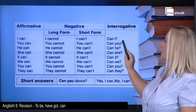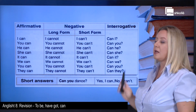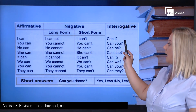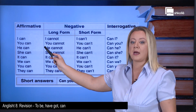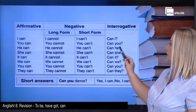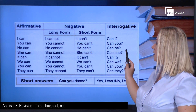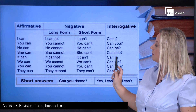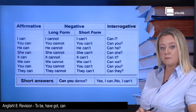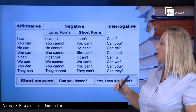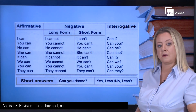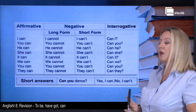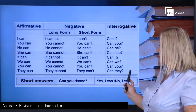To form the interrogative, we again change the position of the verb can and the subject pronoun. I can → Can I? You can → Can you? He can → Can he? She can → Can she? It can → Can it? For the plural forms: We can → Can we? You can → Can you? They can → Can they?